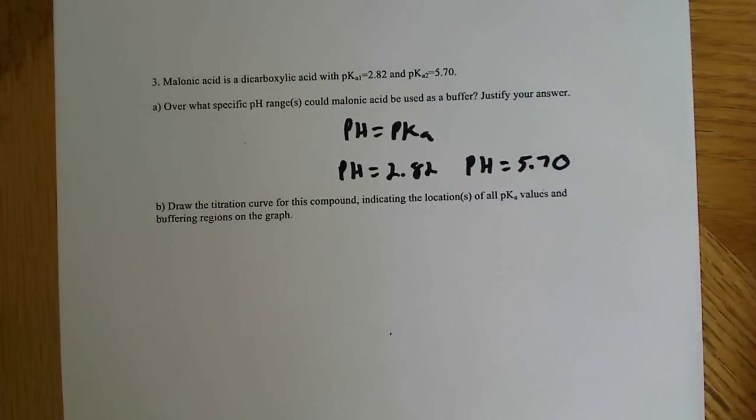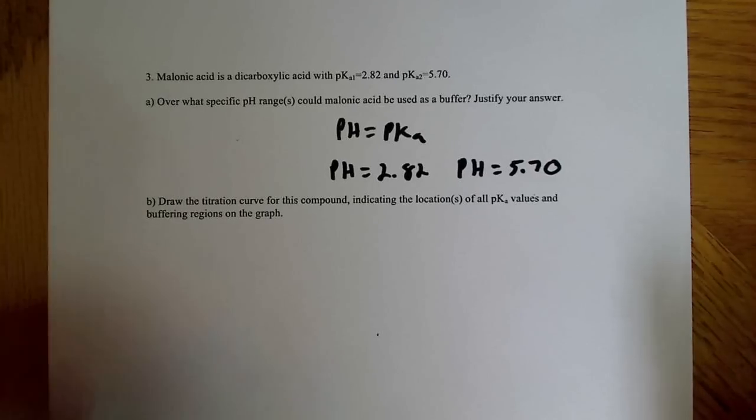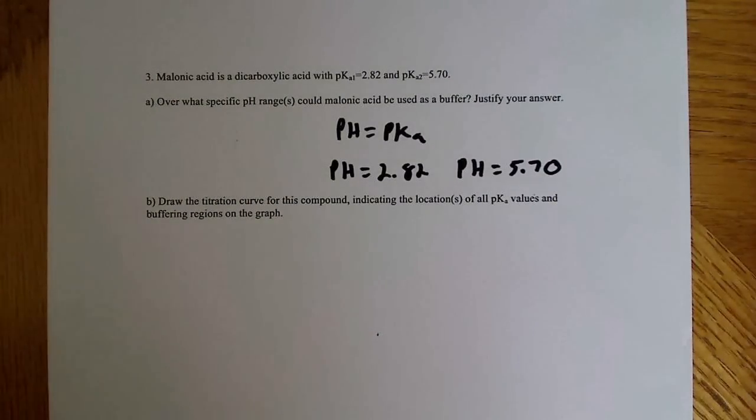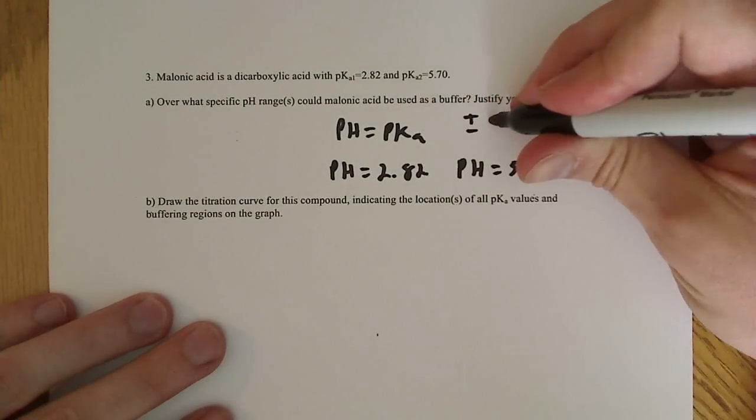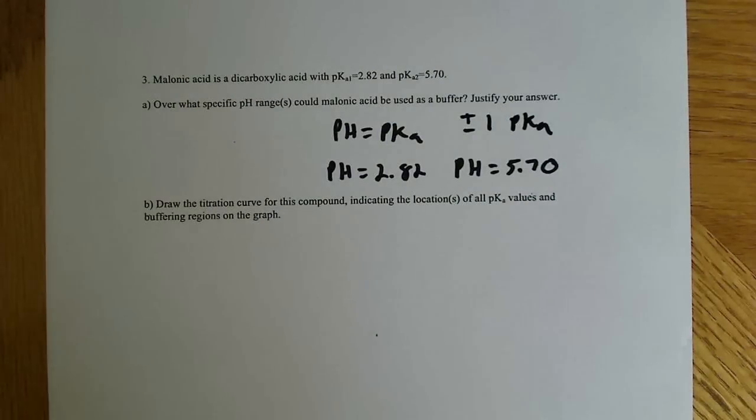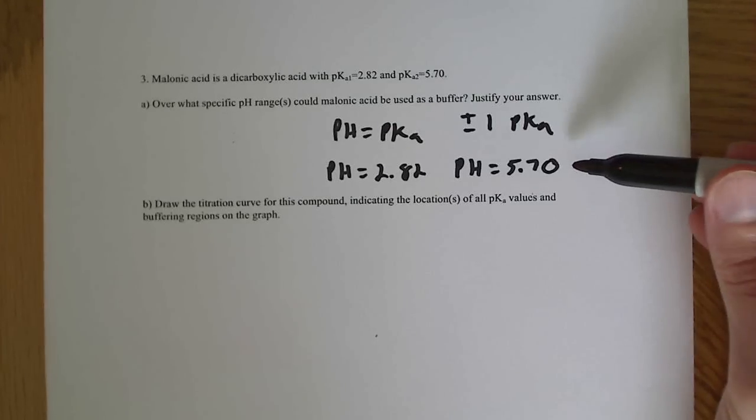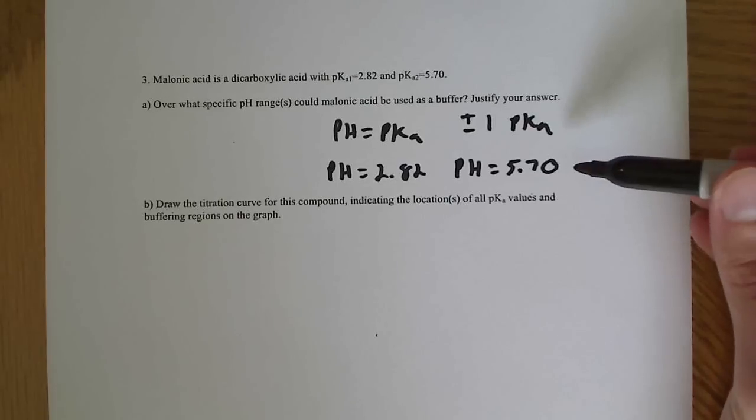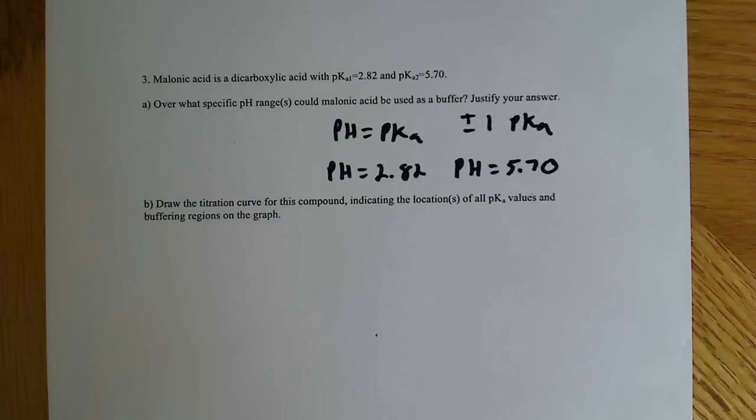But also, as a rule of thumb, this is kind of general and not a steadfast rule, but the range over which this can act as a buffer is usually between plus or minus one pKa unit. So maybe, for example, this one over here has a maximum buffering capacity at 5.7, but that could extend from about 4.7 to 6.7 as far as its ability to act as a buffer.